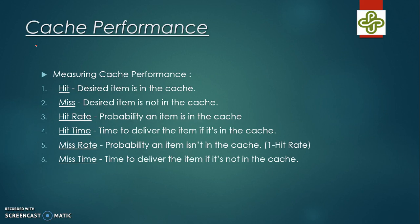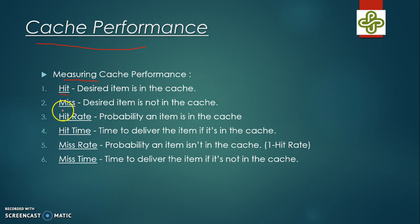Now we know what caches are. Let's look at how to measure their performance. We can measure cache performance with the following parameters: hit, miss, hit rate, hit time, miss rate, and miss time.